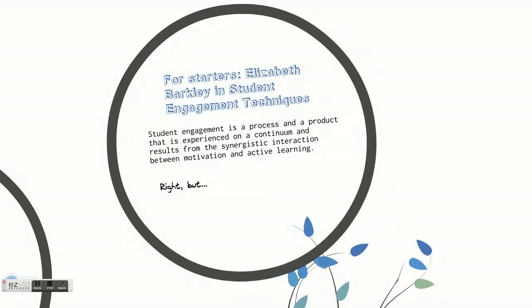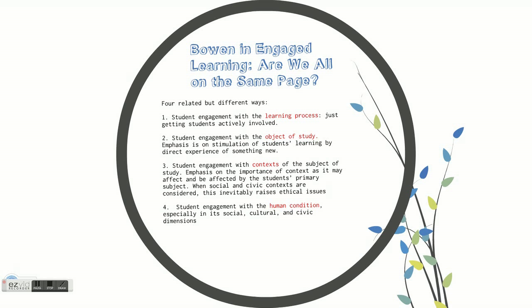To get us started, let's look at some definitions by Bowen in the book Engaged Learning: Are We All on the Same Page? Bowen states four related but different ways of looking at engagement. Number one: student engagement with the learning process — just getting students actively involved. Two: student engagement with the object of study. In this case, emphasis is on stimulation of students' learning by direct experience with something new. Third: student engagement with contexts of the subject of study. The emphasis is on the importance of context as it may affect and be affected by the student's primary subject.